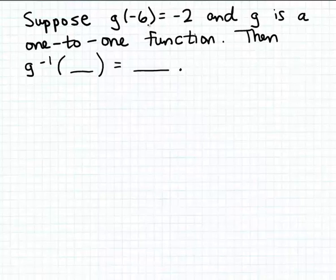In this example, we're given an input and a matching output for a function named g, which we're told is a one-to-one function, which means that it has an inverse function.